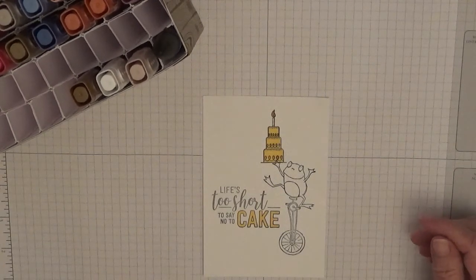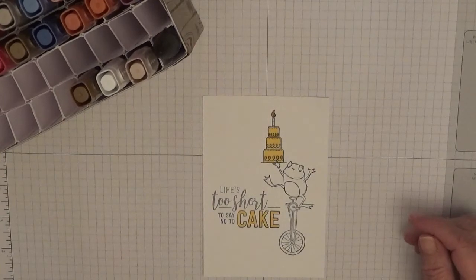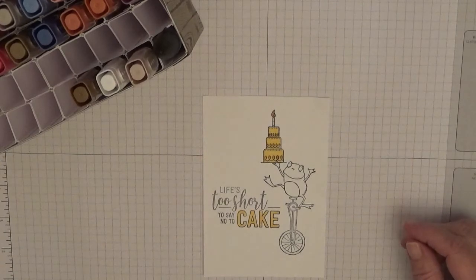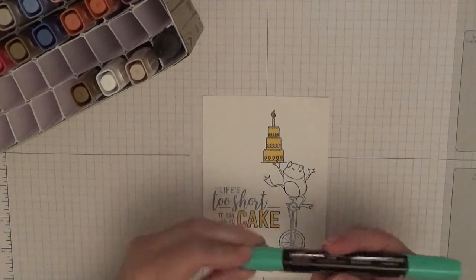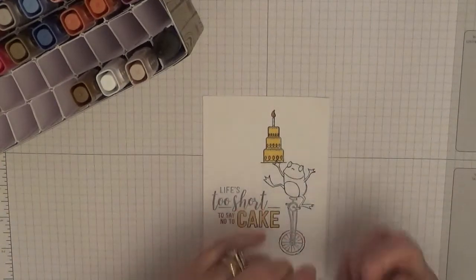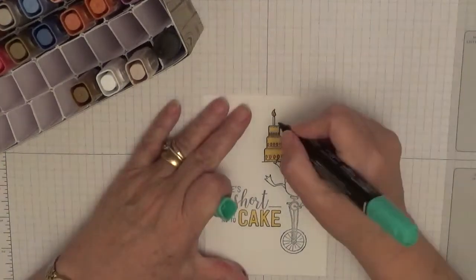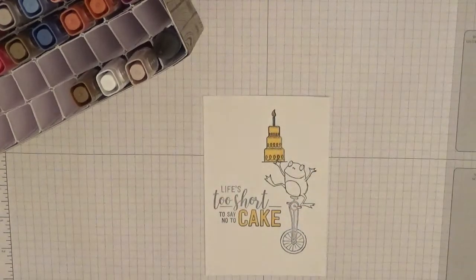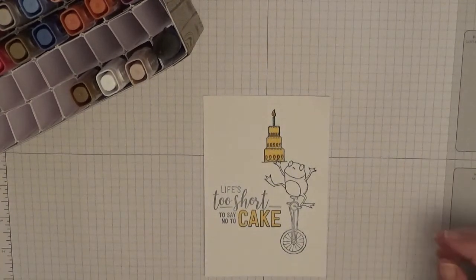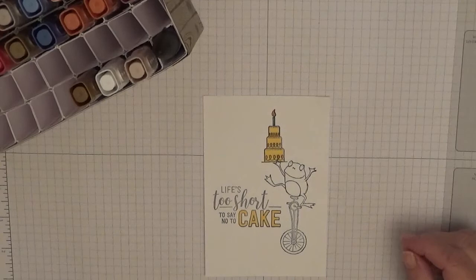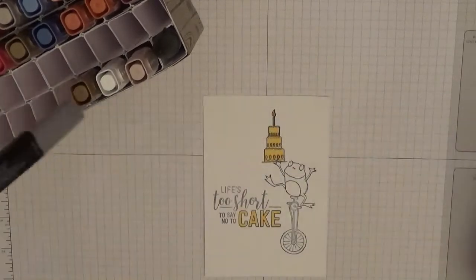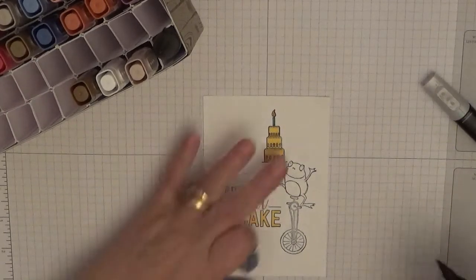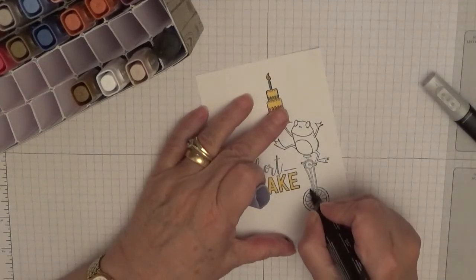And I think we'll have a blue candle, so we'll do it with - well, this is green, never mind. Right, to color the bike in, I use grey and black. That's for the wheels. Wheel.